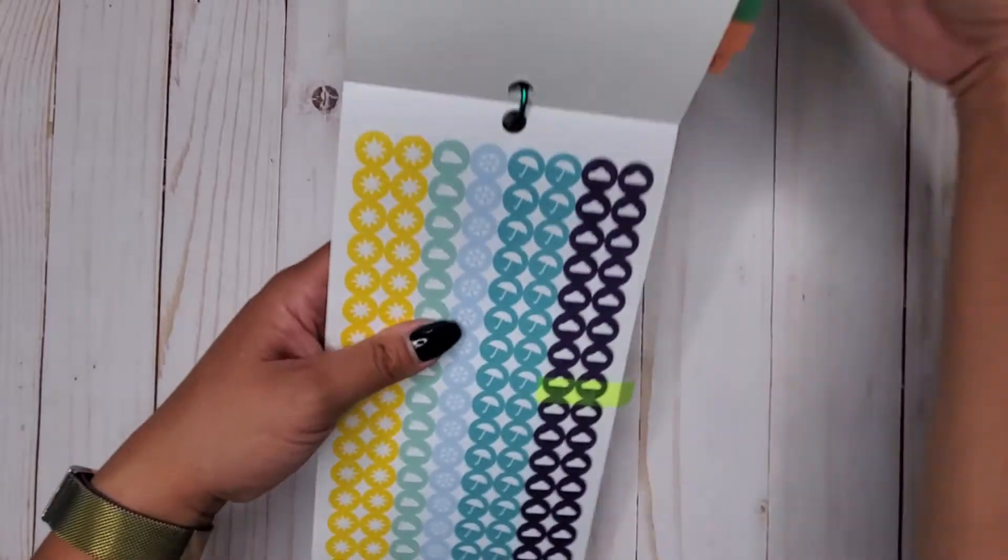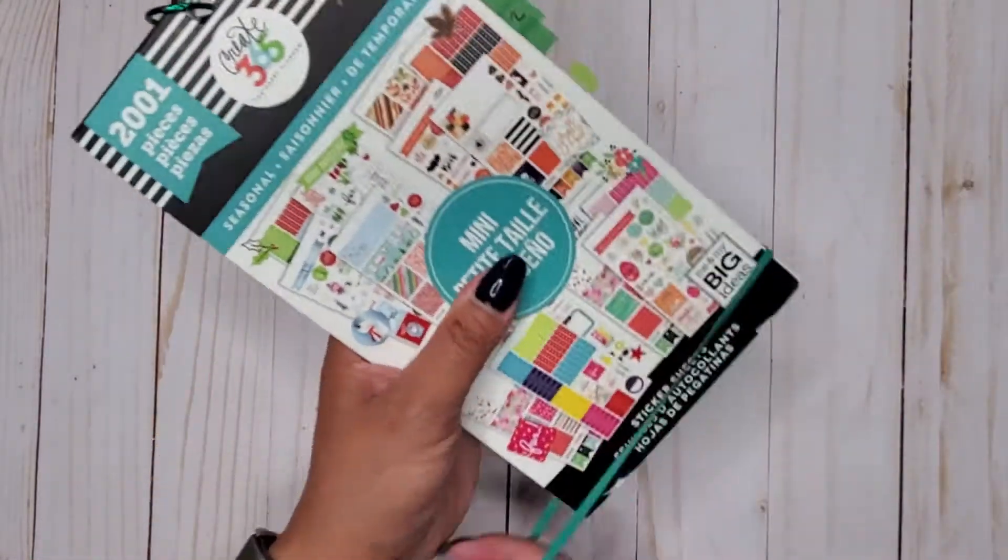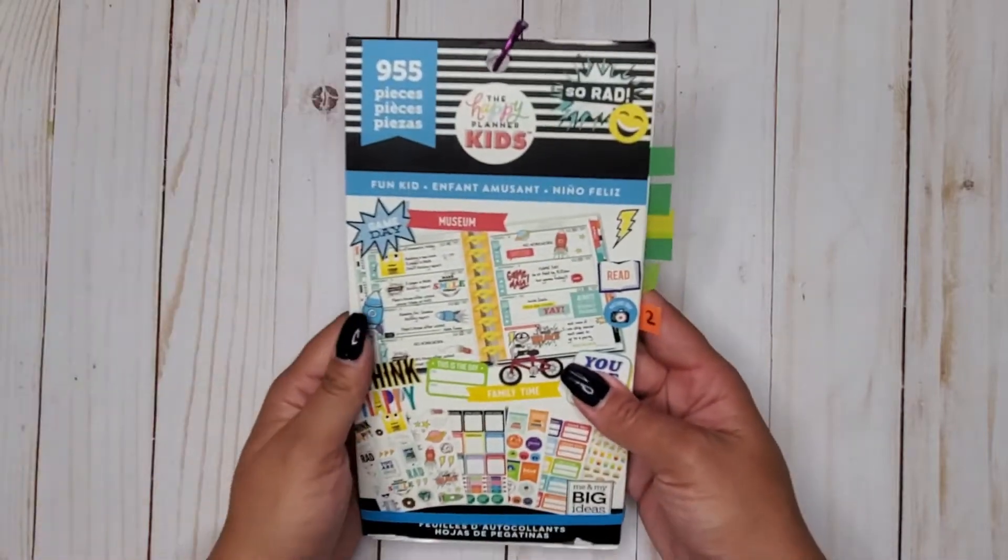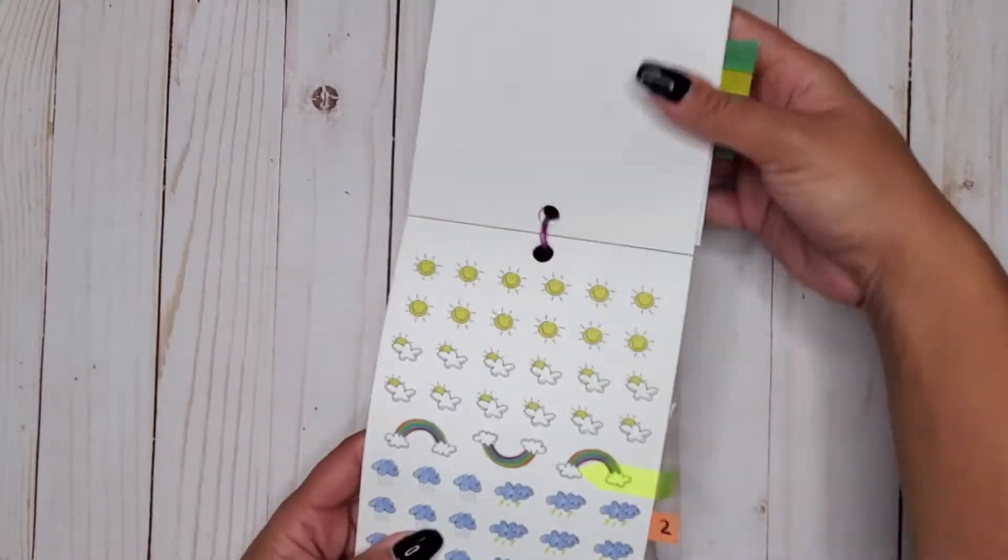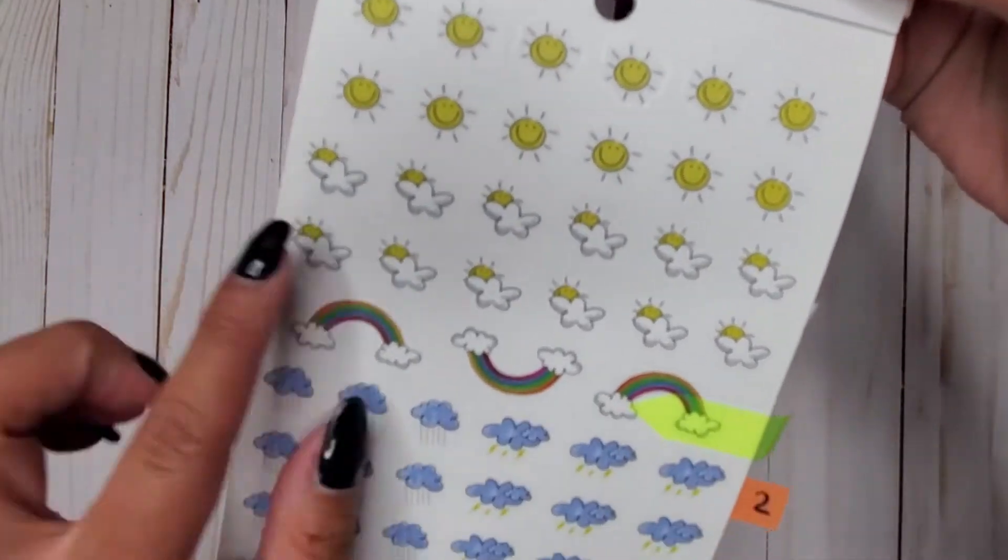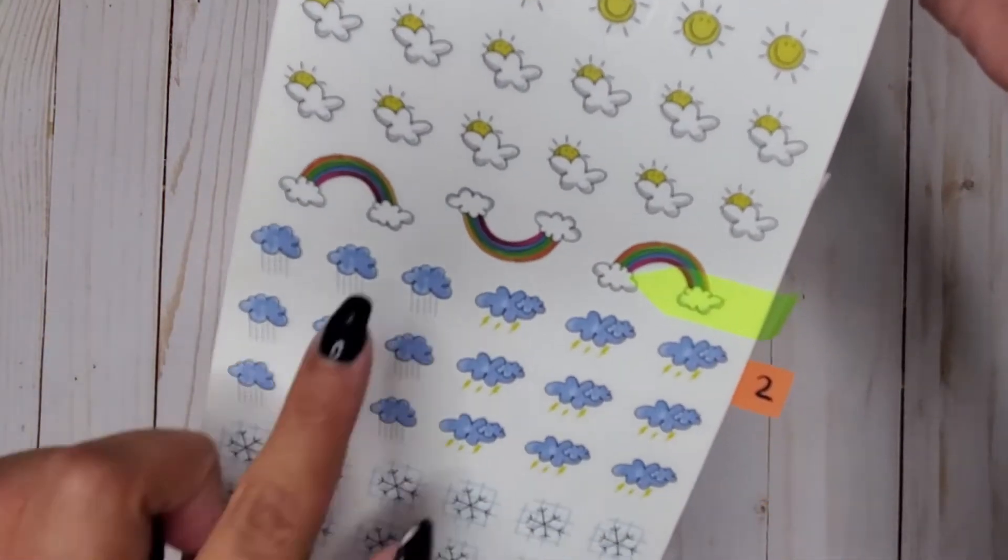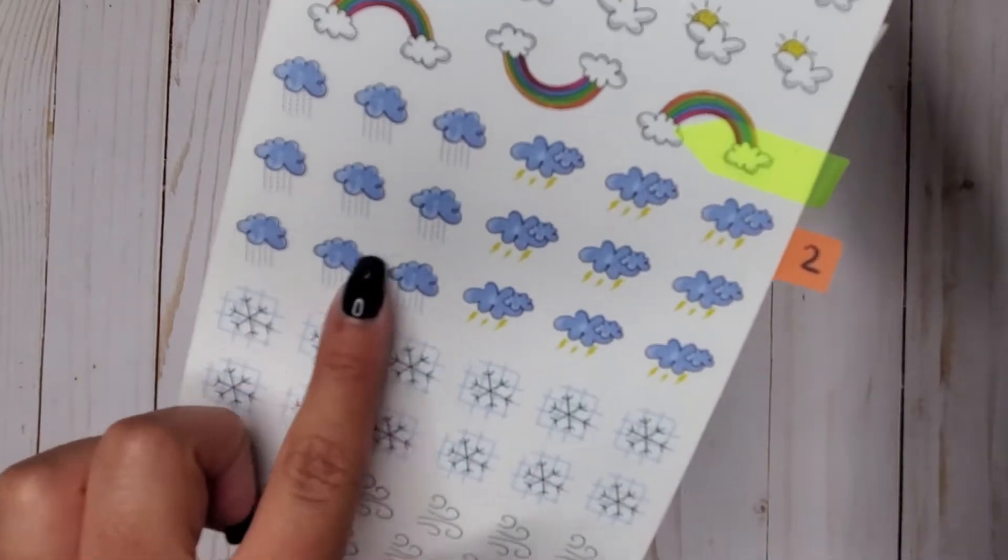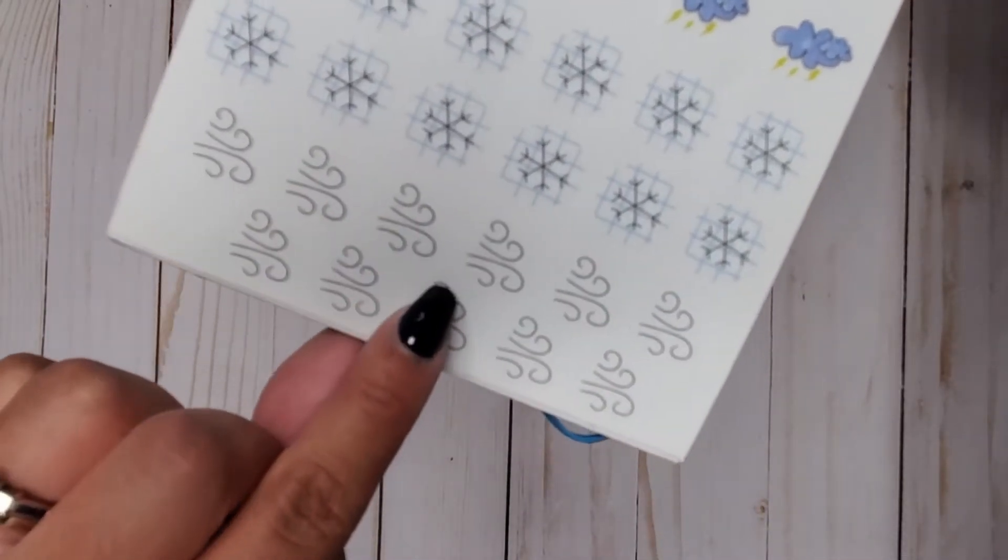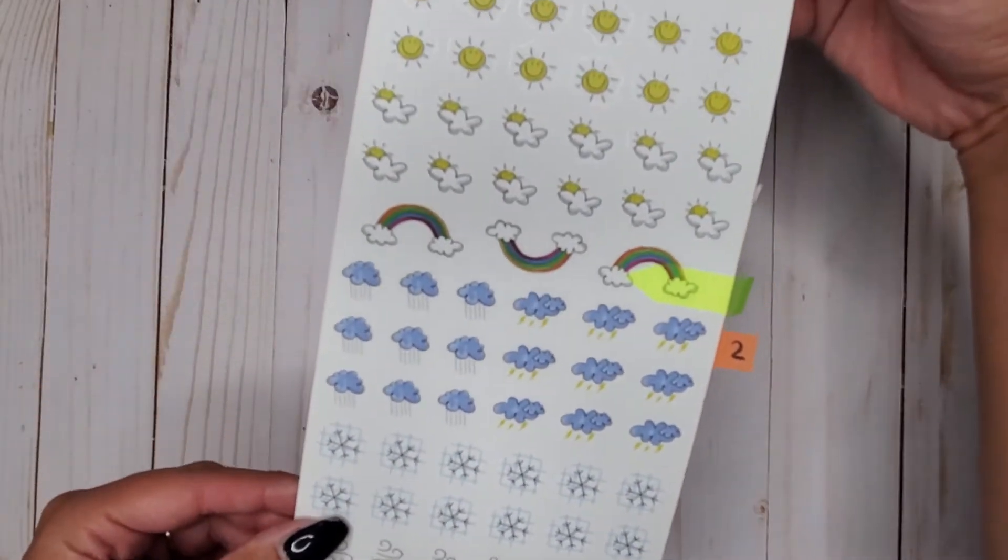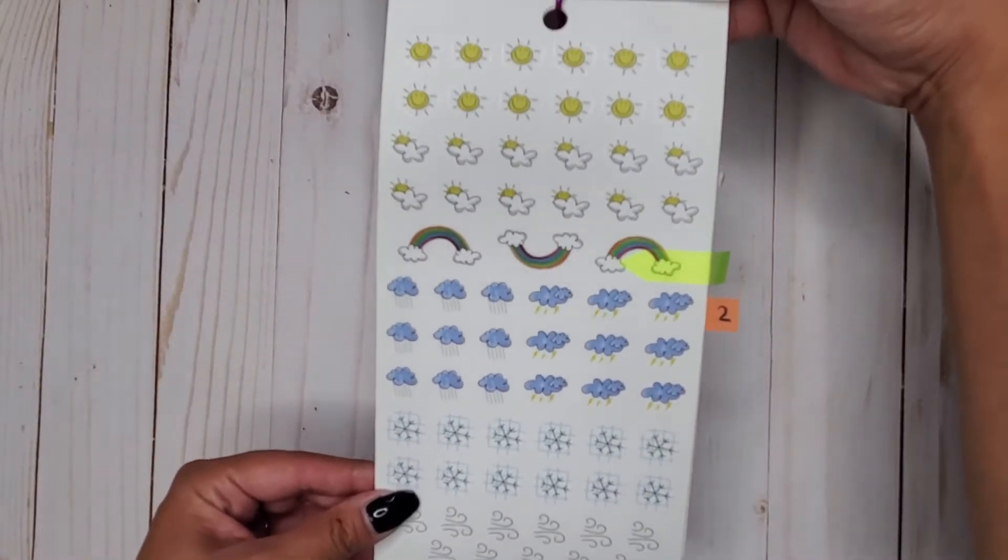Then we have fun kid 955. In here we have our little sun, we have like our cloud with the sun, we got a rainbow in here, we have our rain showers, thunderstorms, lightning, snow, and then wind. These are all on clear stickers. So this is in fun kid 955.